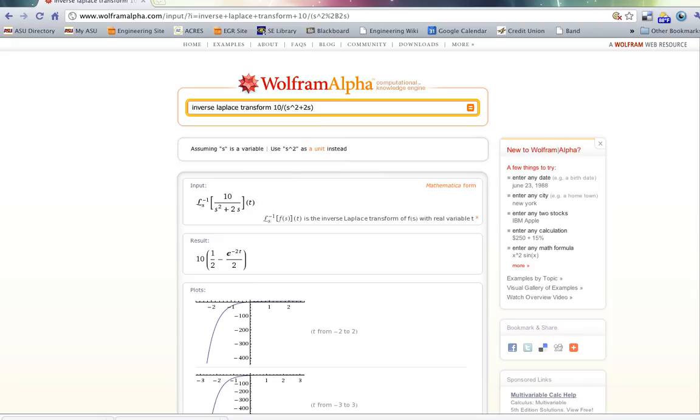and it gives me a result. It gives me the result that the Laplace transform is 10 times 1 half minus e to the minus 2t over 2. So it would be 5 minus 5e to the minus 2t. And then it even plots it.